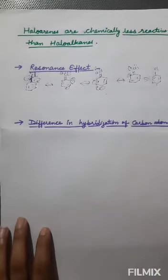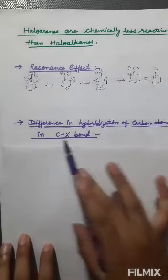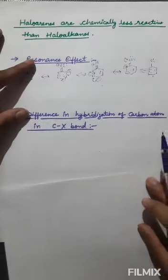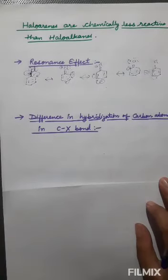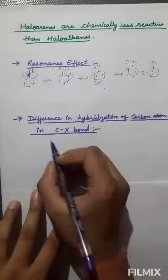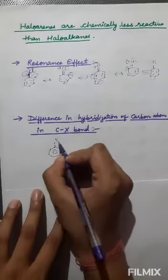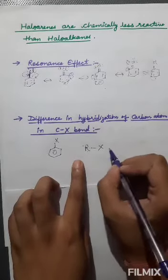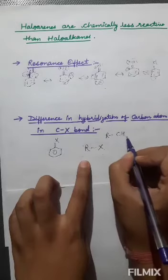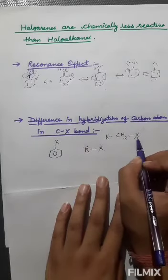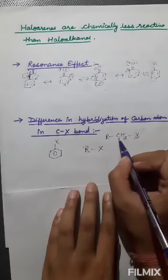The next point explaining why haloarenes are less reactive is the difference in hybridization of the carbon atom in the C–X bond. In haloalkanes, the carbon atom attached to the halogen is sp3 hybridized, whereas in haloarenes the carbon atom attached to the halogen is sp2 hybridized. The percentage s-character in sp3 hybridized carbon is about 25%, while for sp2 hybridized carbon it is about 33%.